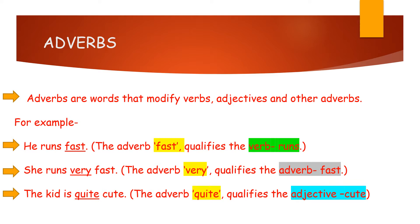Next one: He runs very fast. We already learned in the previous sentence that fast is the adverb. So what is 'very' then? Very is another adverb which is qualifying the adverb fast. So, he runs very fast — 'very' modifies 'fast', and 'fast' modifies the verb 'runs'.